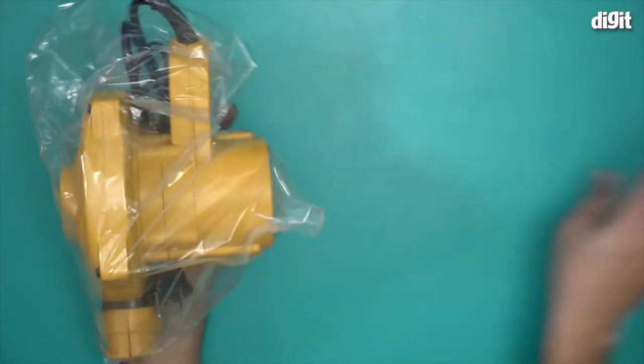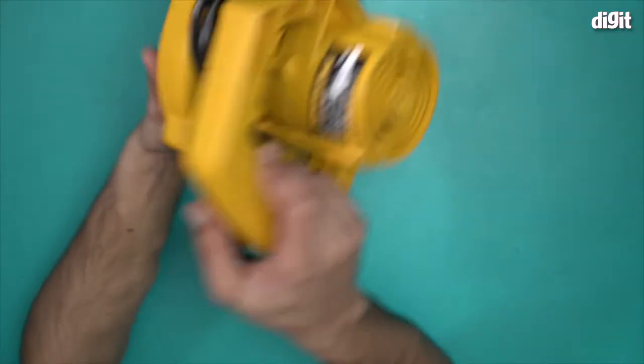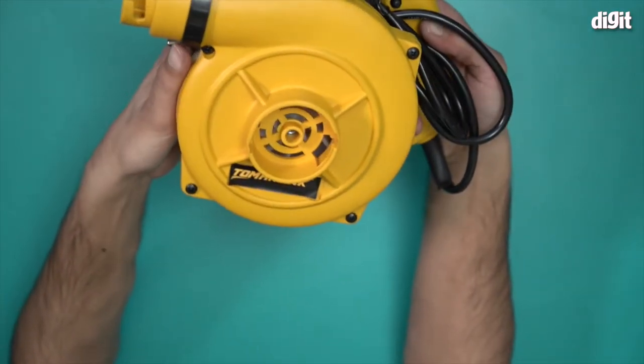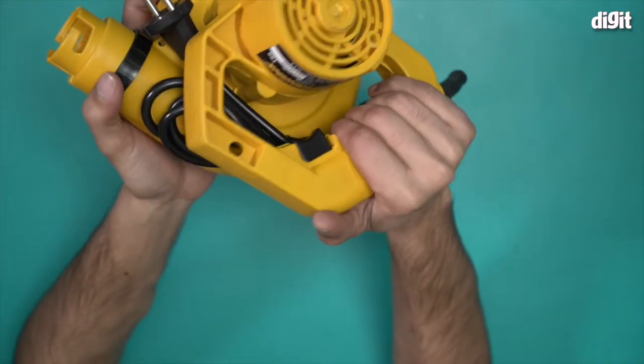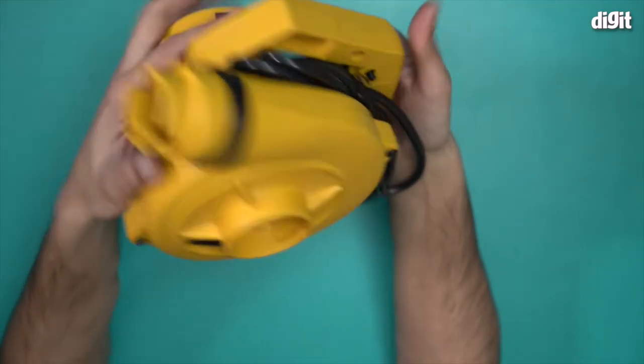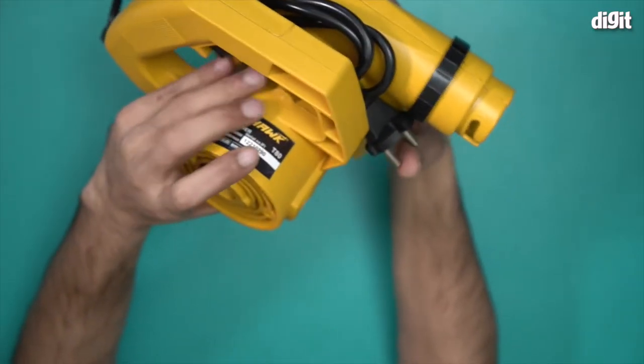This is the Tomahawk T-80. It has a weight of 1.8 kilos, which is actually pretty lightweight. 1.8 kilos is nothing at all for such an appliance.